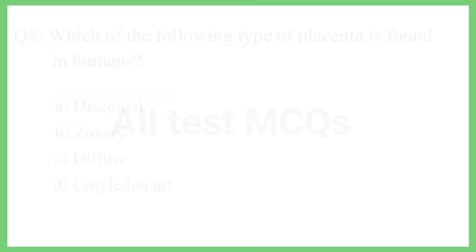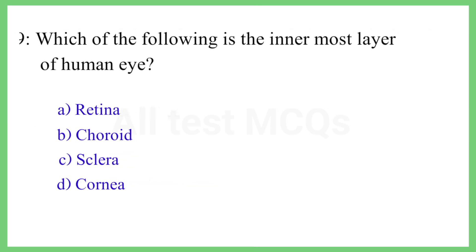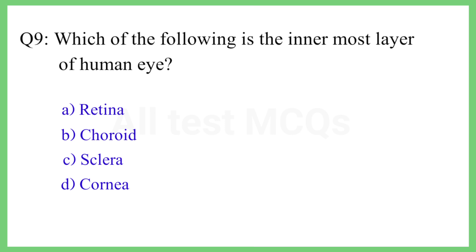Question No. 9. Which of the following is the innermost layer of the human eye? The correct answer is Option A: Retina.